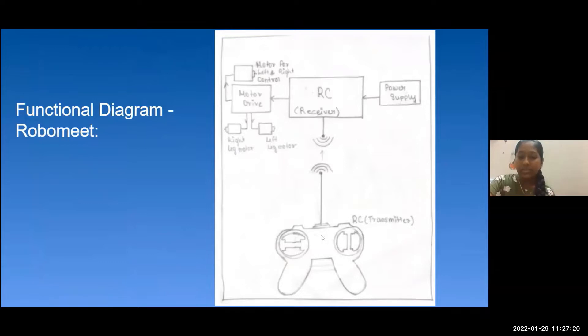This controller has a transmitter in the joystick and the receiver in the robotics motor drive module. The transmitter sends a certain frequency, which is 27 megahertz, and the receiver detects the frequency, closes the circuit, and connects the power supply to the motor for movement.